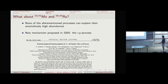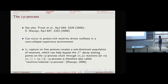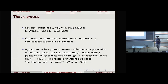The νp process, the meat of this talk, was proposed in 2005 by Carla Fröhlich and collaborators. It looks like the RP process, but with a subdominant neutron population in a proton-rich outflow that can help bypass beta-plus decay waiting points through NP or N-gamma reactions. Joe calls this the neutrino-induced RP process: free protons, and through anti-neutrino capture on protons, you generate a subdominant neutron population that bypasses those waiting points.